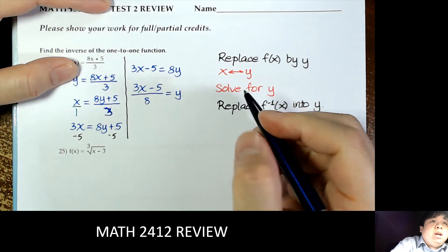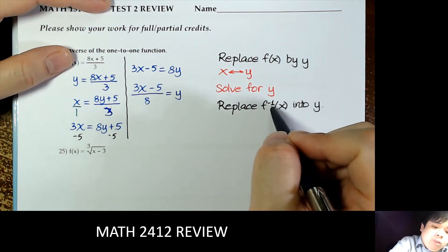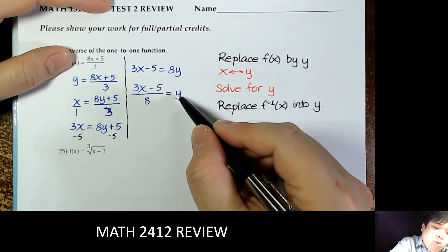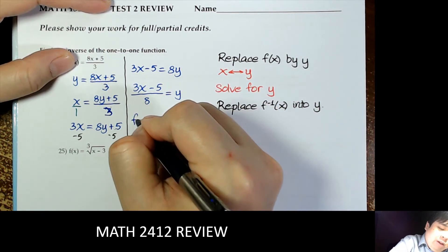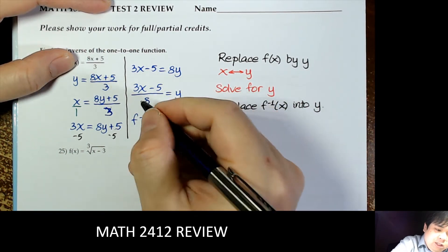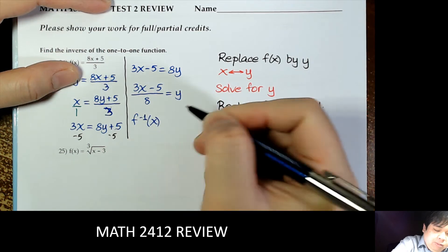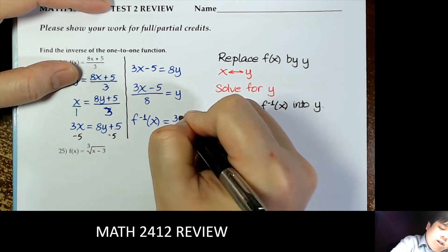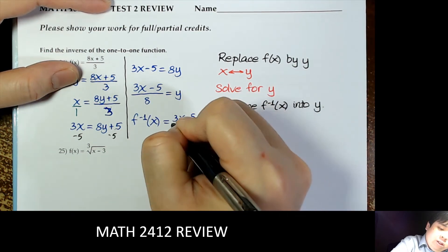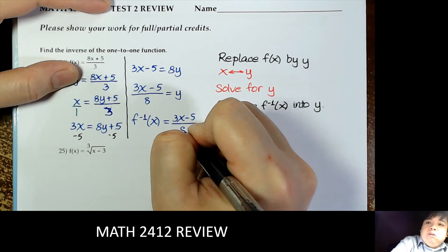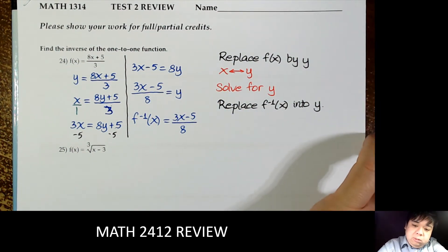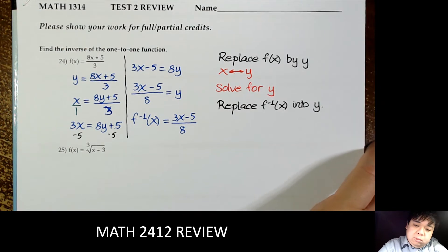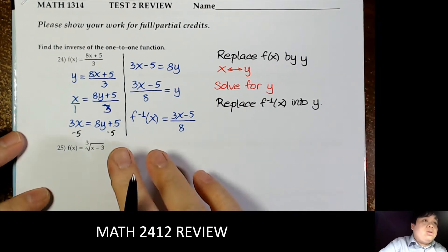Finally, use the inverse notation: replace y by f inverse of x. So f inverse of x equals 3x minus 5 over 8. That's the first one.